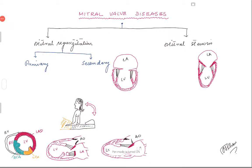Hello everybody, today we are going to talk about mitral valve diseases. We will focus on mitral regurgitation and mitral stenosis. I won't go into different causes or pathophysiology, but we will touch on key points and things you need to remember when taking care of patients with mitral valve disease. The two main problems are mitral regurgitation - leakage of the valve - and mitral stenosis, where calcification or rheumatic heart disease causes the valve to become tethered.